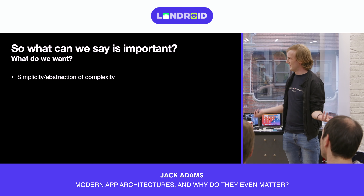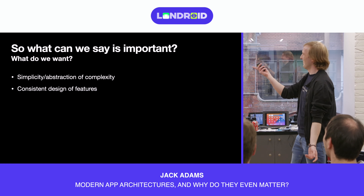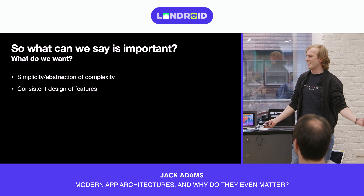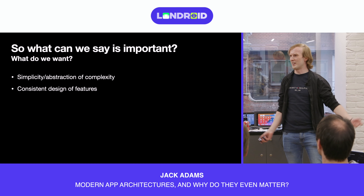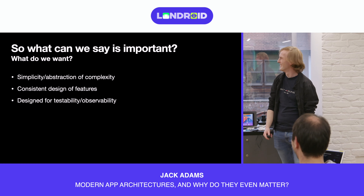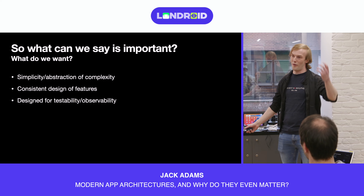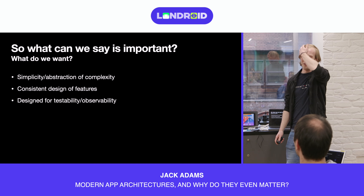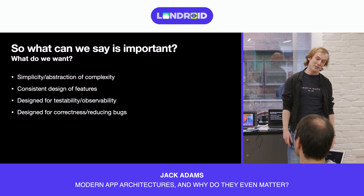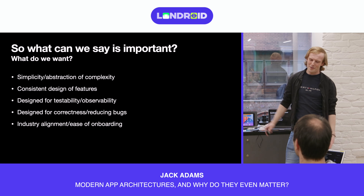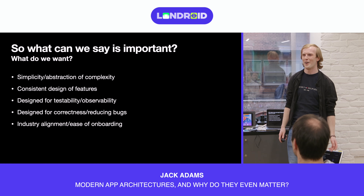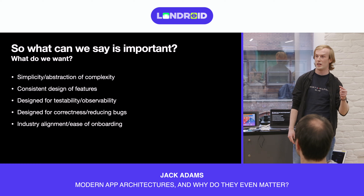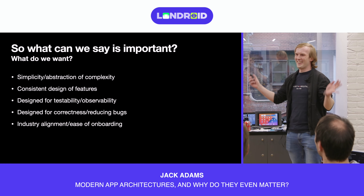Simplicity and abstraction of complexity — we don't want to open our code and be completely lost. We want consistent design of features: if I'm in team A on feature A and a developer from team B asks me for help, ideally I open the root view of their feature and can find what I want because I know where it's supposed to be. Testability and observability are really important. Correctness and reducing bugs — you want to write code that is less likely to be buggy. Industry alignment and ease of onboarding: someone said if you use MVVM, a developer joins and commits in two days; if you use MVI, they commit in two months.